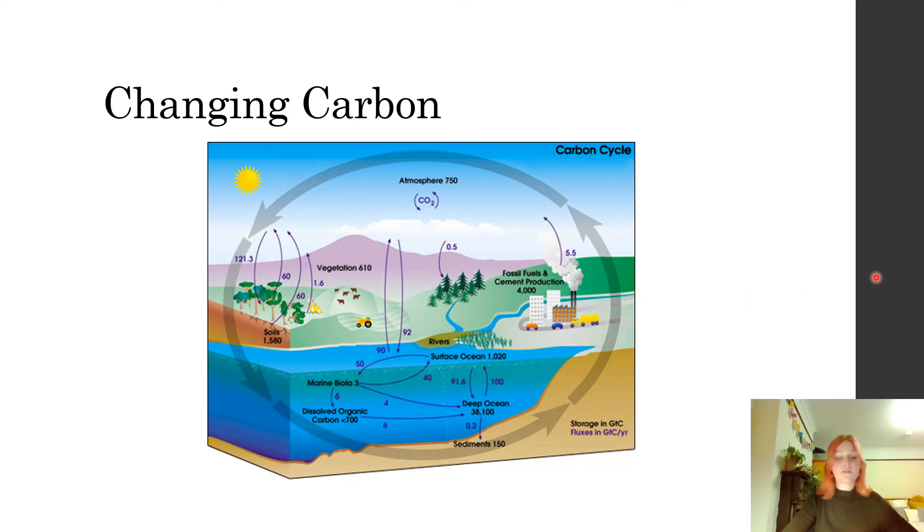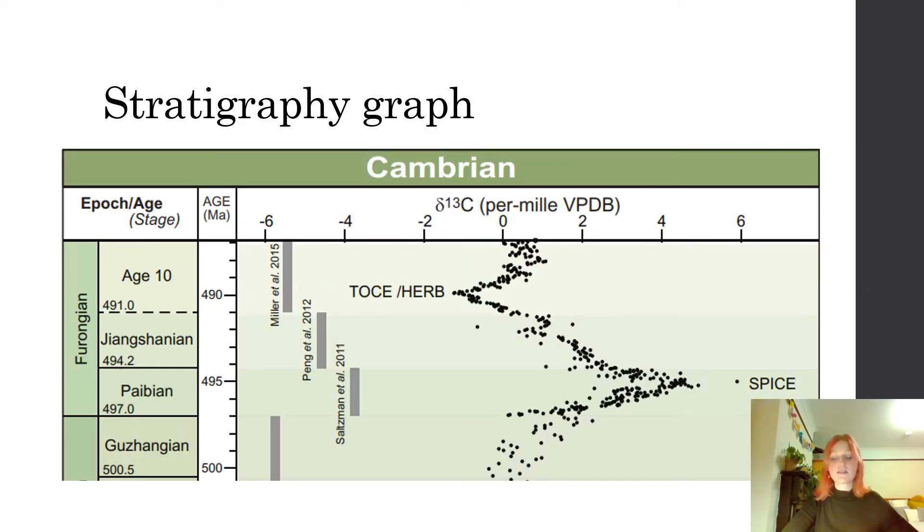These isotopic signals can be recorded within both marine and terrestrial sediments across geologic time. Today we measure these within stable isotope mass spectrometers. These machines produce graphs such as this, which is showing a Cambrian marine stratigraphy graph.